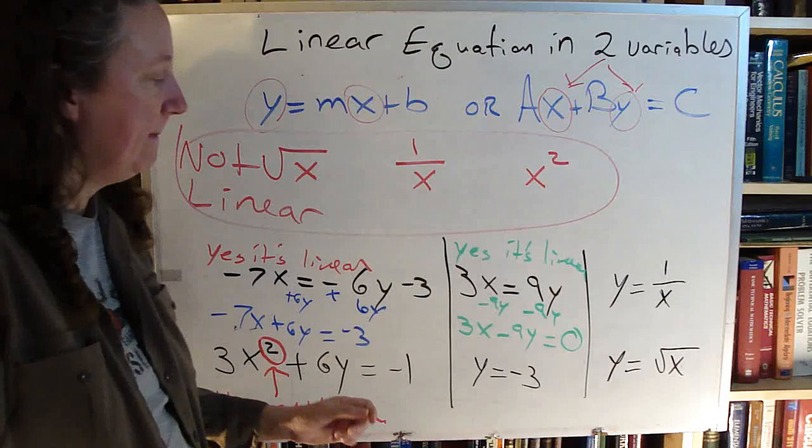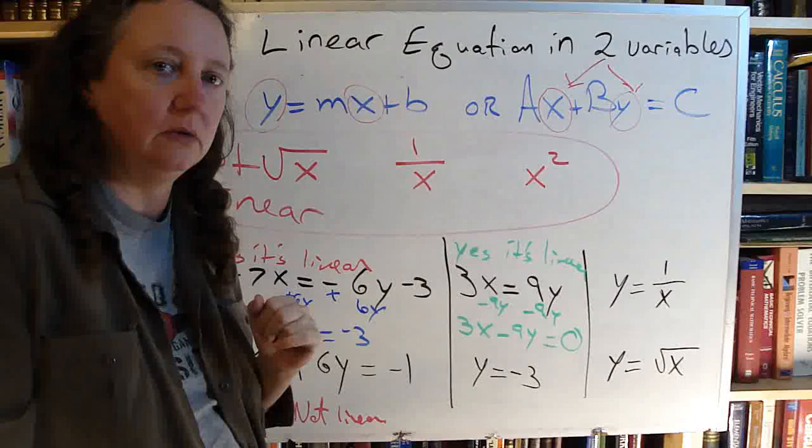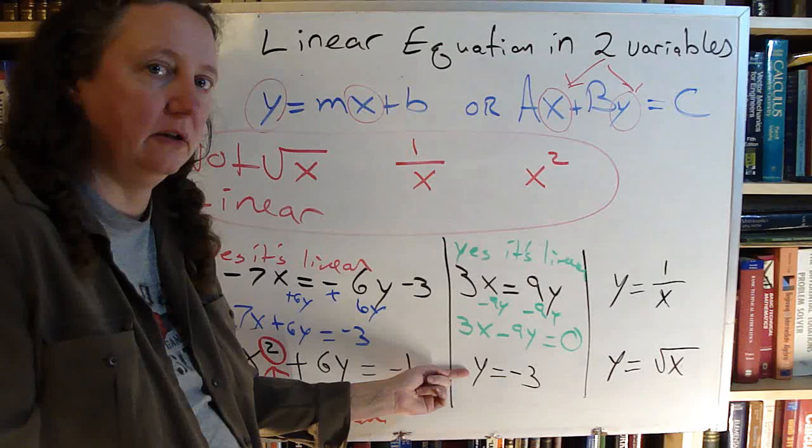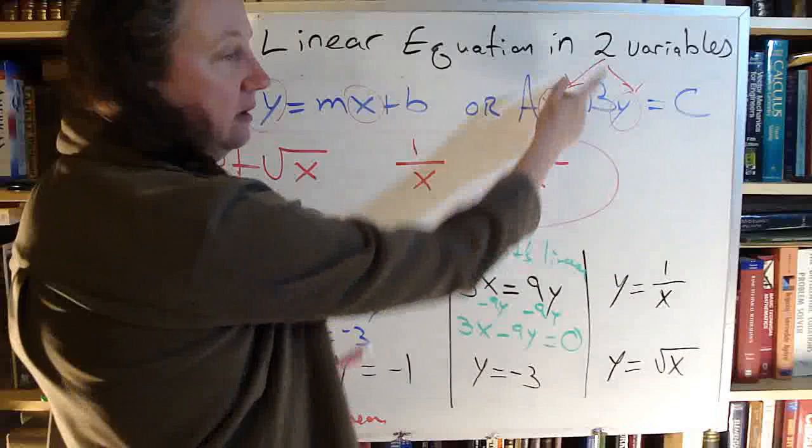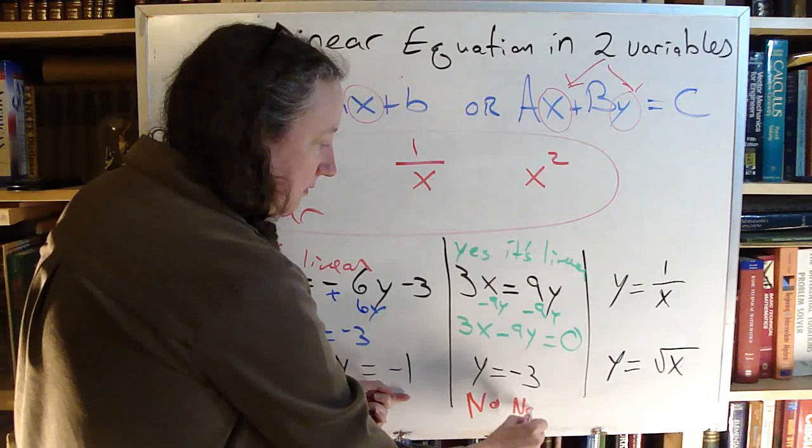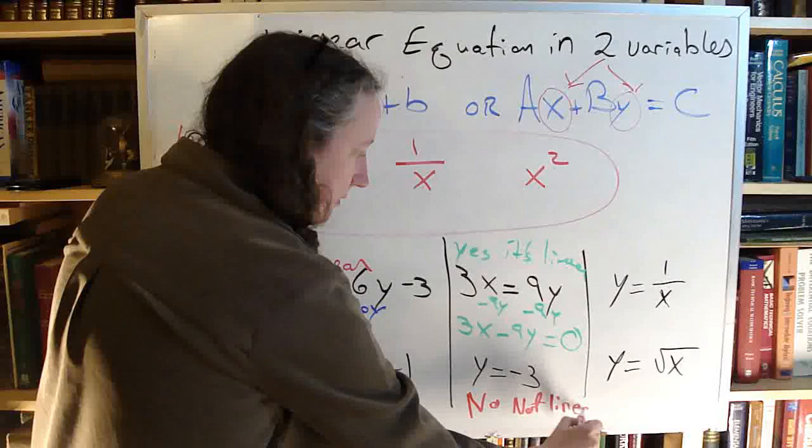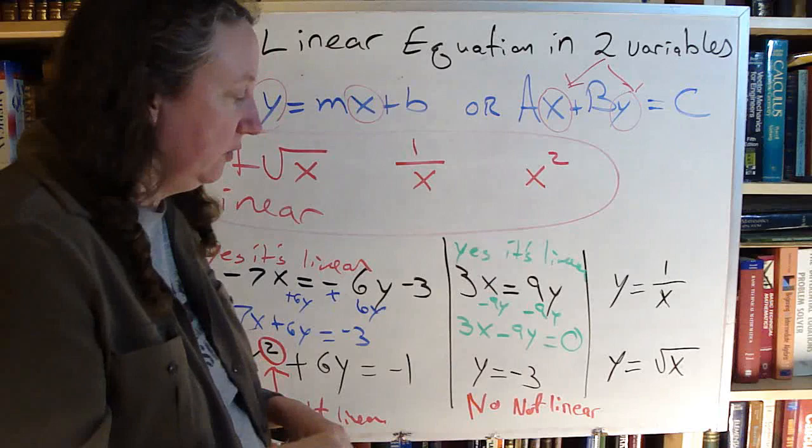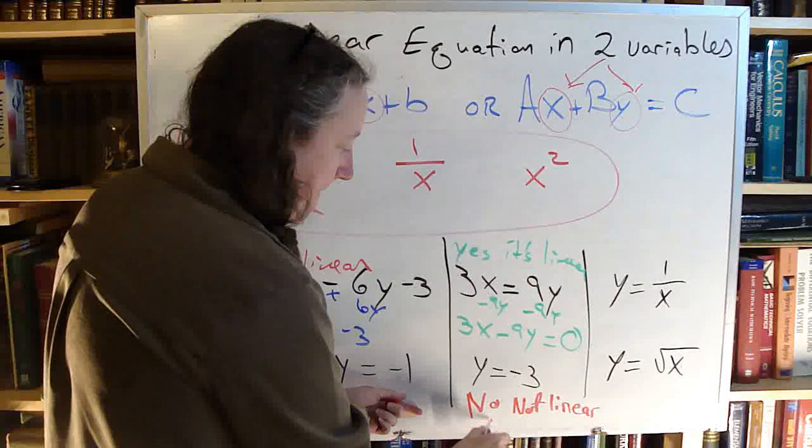Looking down at this one. y equals negative 3. Doesn't look like that, doesn't look like that. Can I make it look like either of these two? Well, this has an x in it, that has an x in it. This does not have an x in it. So the problem with this one, it doesn't have two variables. So my answer here is no, it's not linear. And the reason for it is because it has only one variable. So no, it's not linear in two variables.